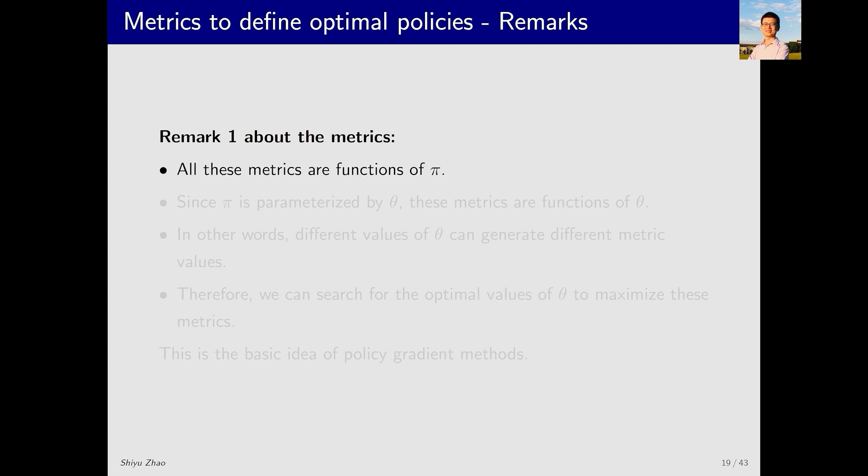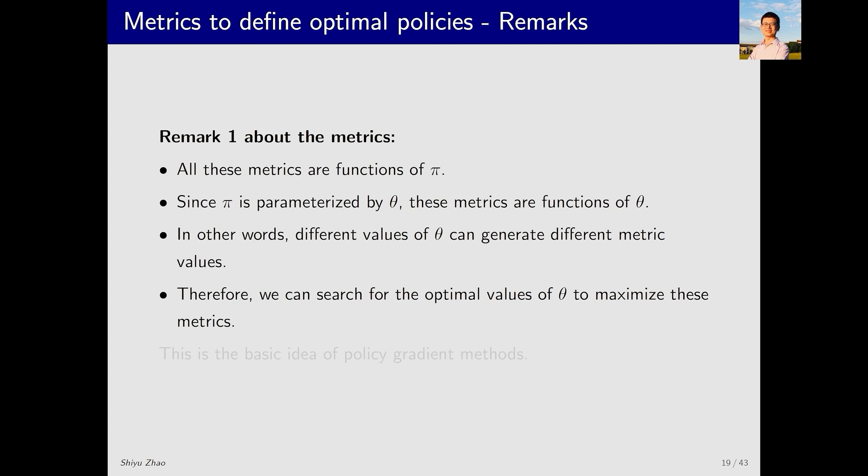The first remark is that these metrics are all functions of the policy. Whether it's v̄_π or r̄_π, both are functions of the policy, and this policy is parameterized by θ. Therefore, both v̄_π and r̄_π are functions of θ. Different values of θ will give different values of the metric. Our goal is to optimize and find an optimal θ that maximizes the metrics. This is the basic idea of policy gradient methods.